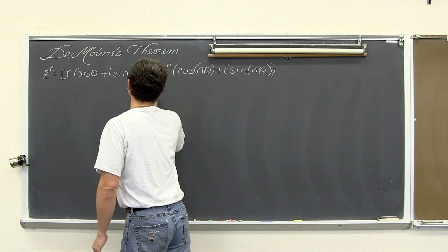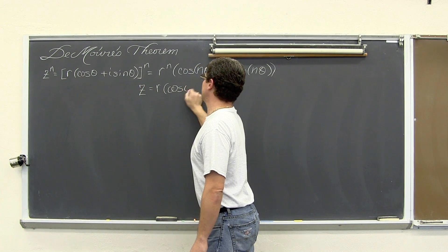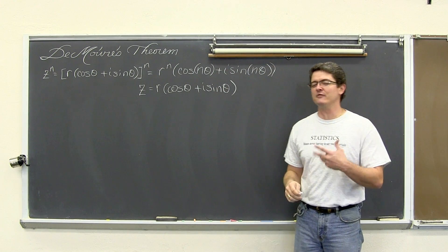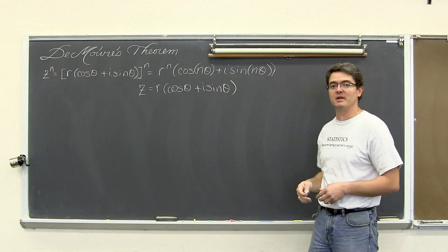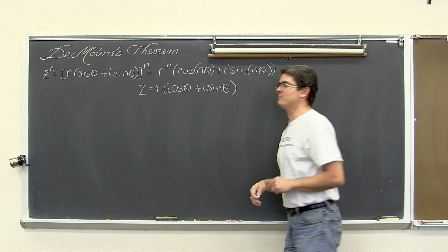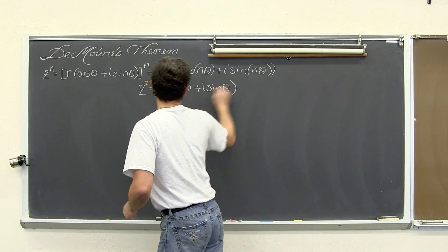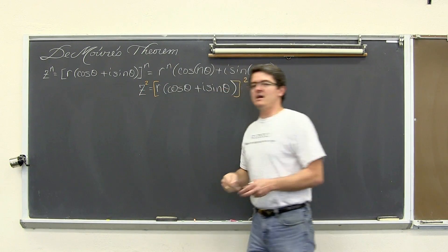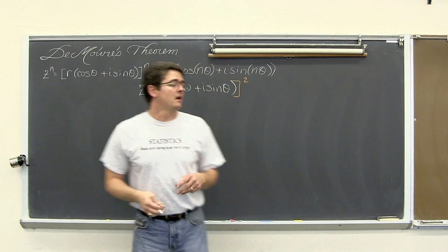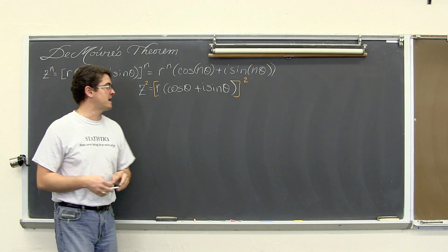Here we have a complex number in polar form: r cosine θ plus i sine θ. If you want to skip the next few minutes and just get to the example, go right ahead. But we are going to take this complex number in polar form, square both sides, and I am going to show you the amount of work it takes just to raise this complex number to the second power, and then hopefully point out how you can see the pattern in this formula.